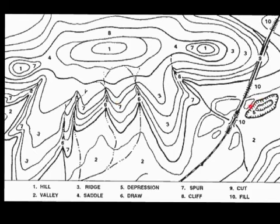Depressions are indicated by a different type of contour line. You'll notice these little marks, which are called hachure marks. They indicate that we are going down — this is a depression or a hole. The contour interval remains the same.